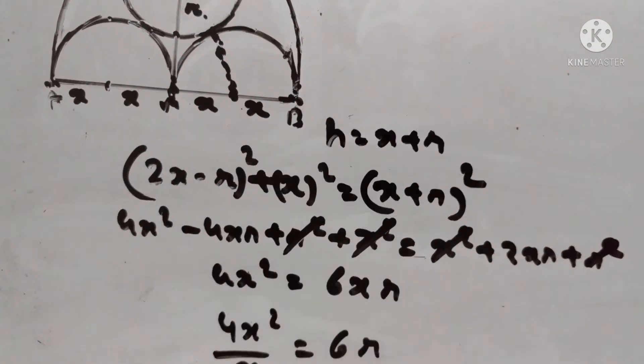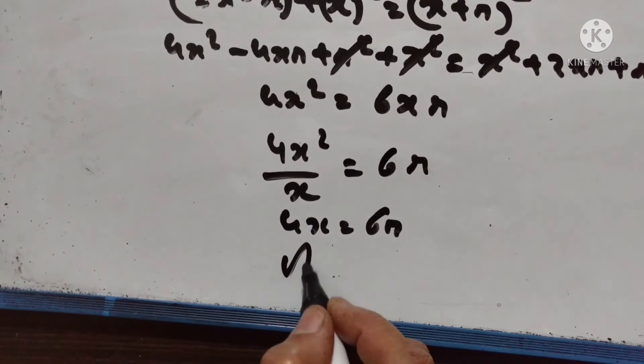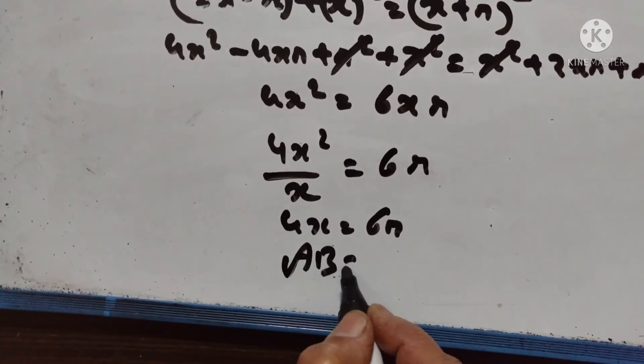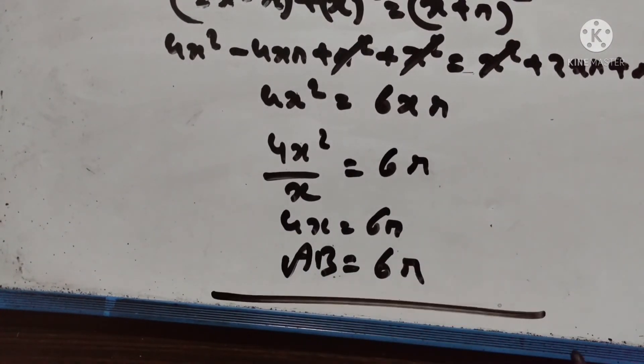Since 4X equals AB, therefore AB equals 6R. Proved.